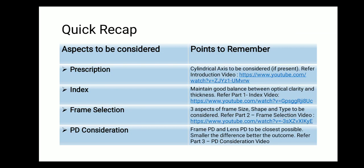Let me quickly recap the thickness series. This is the fourth video — we had an introductory video, then parts one, two, and three. Key aspects: for prescription, cylindrical axis must be considered; for index, maintain a good balance between optical clarity and thickness; for frame selection, consider size, shape, and type; and for PD consideration as discussed today, frame PD and lens PD should be as close as possible — the smaller the difference, the better the thickness outcome.